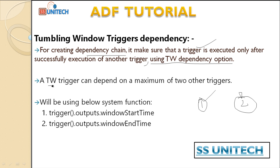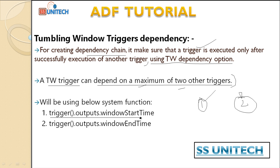A tumbling window trigger can be dependent on a maximum of two other triggers — we cannot add dependency with more than two triggers. We will also be using the system variables 'trigger output window start time' and 'trigger output window end time', which help us execute our pipelines.